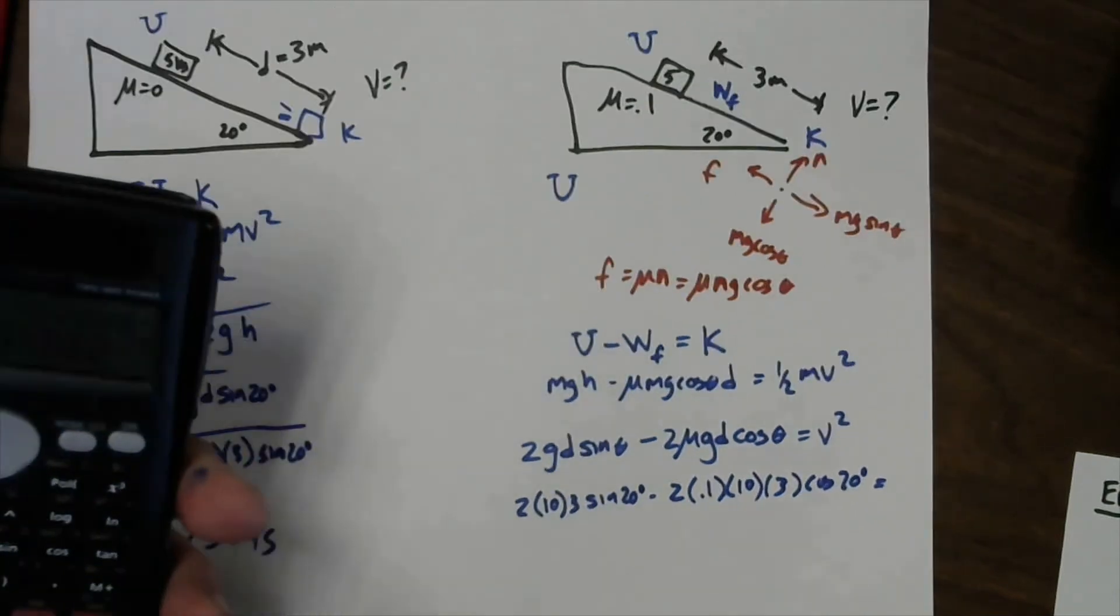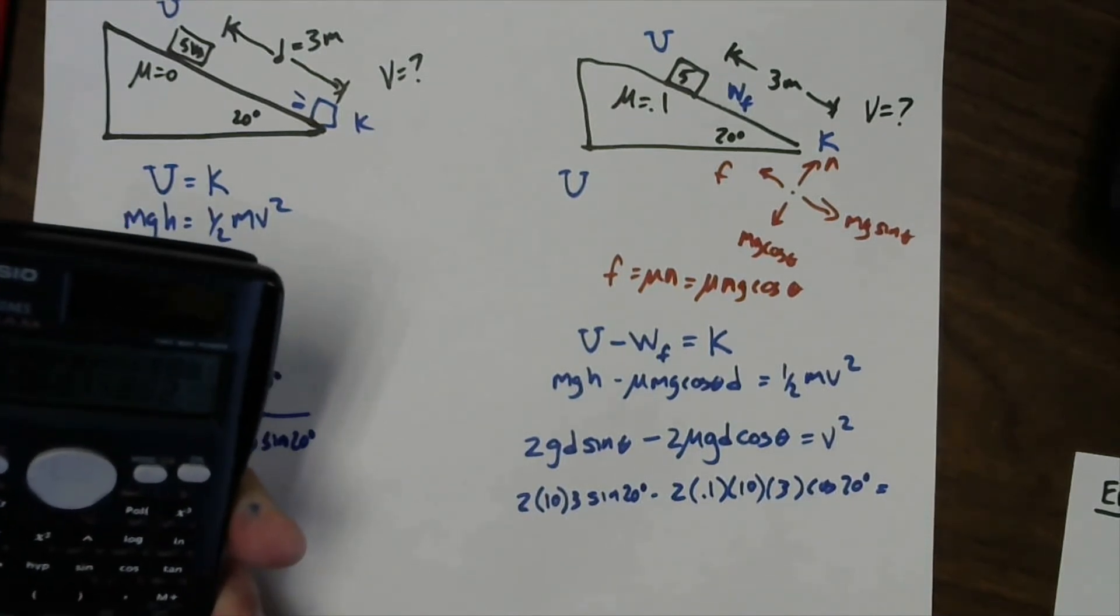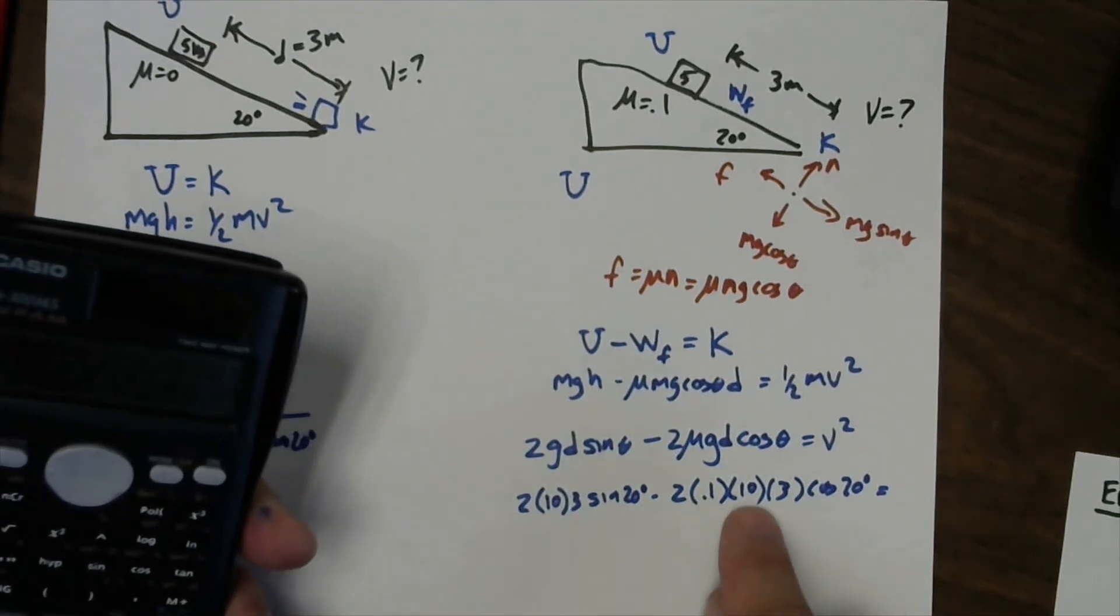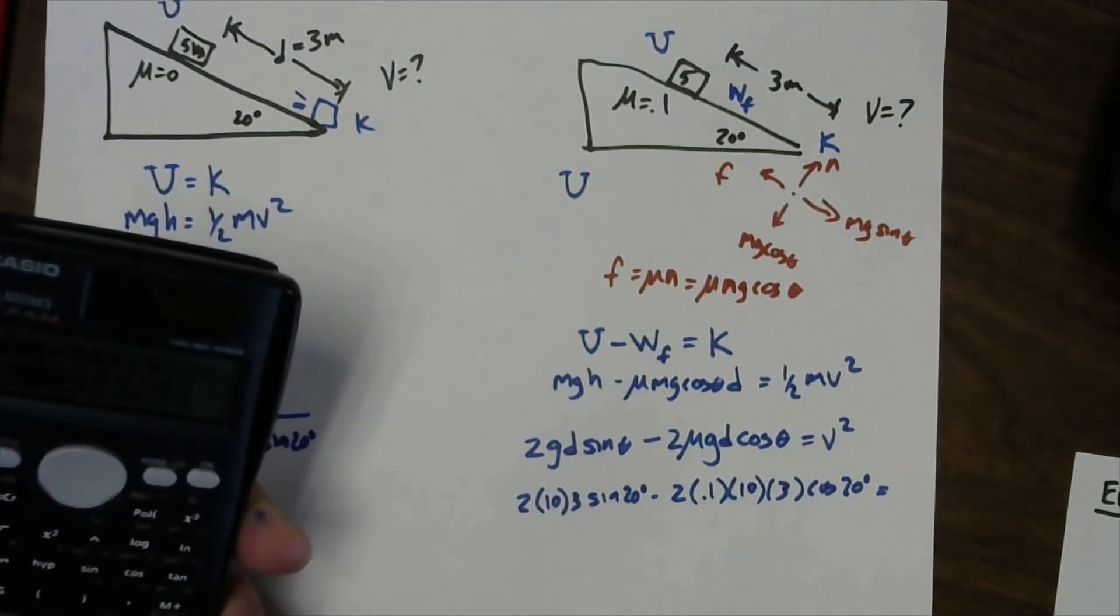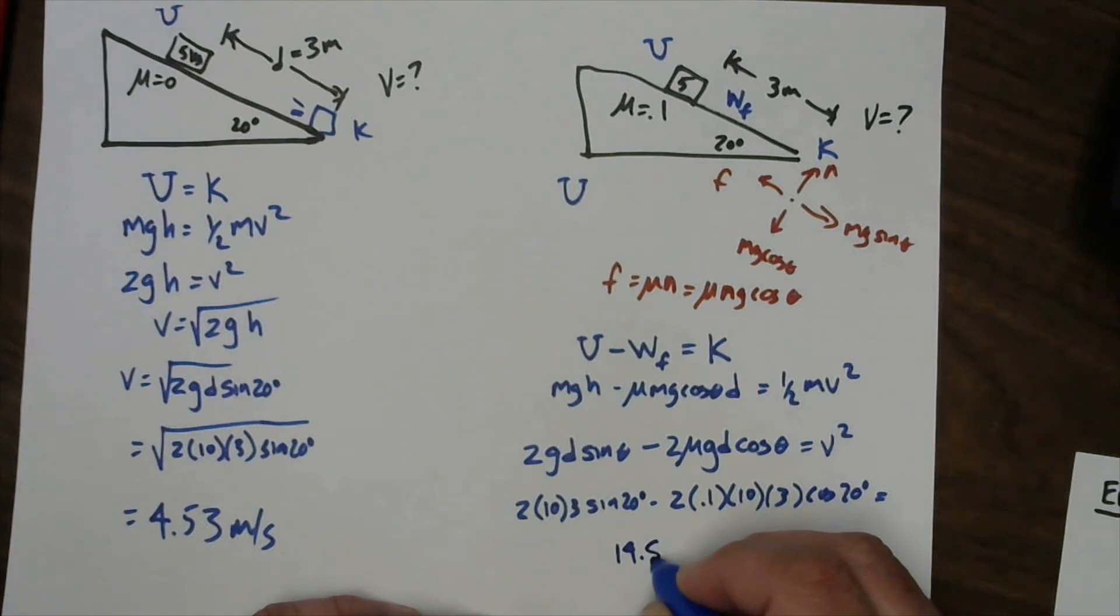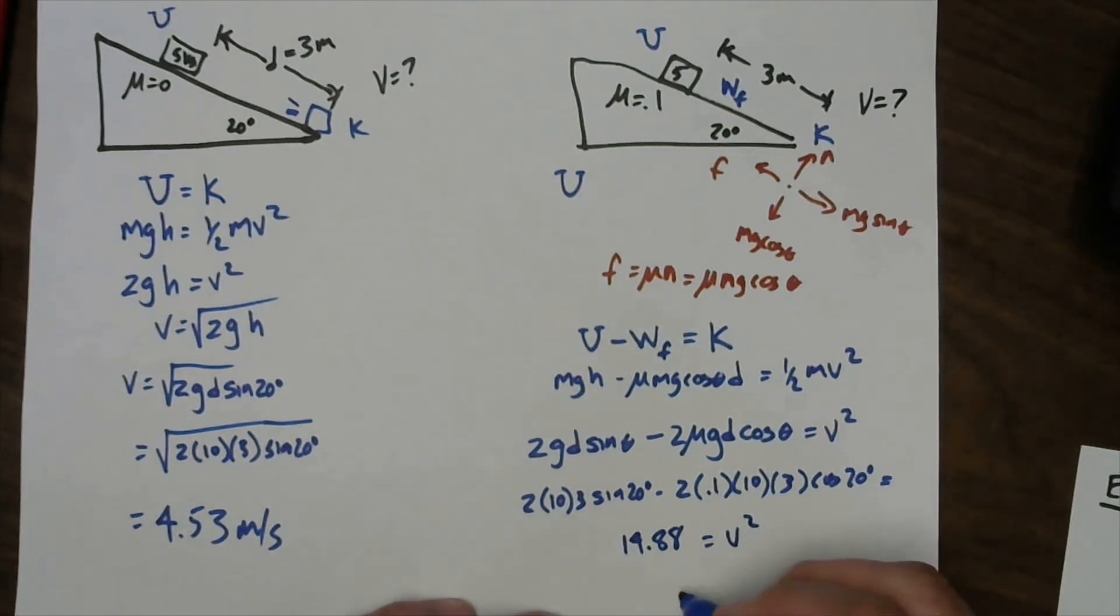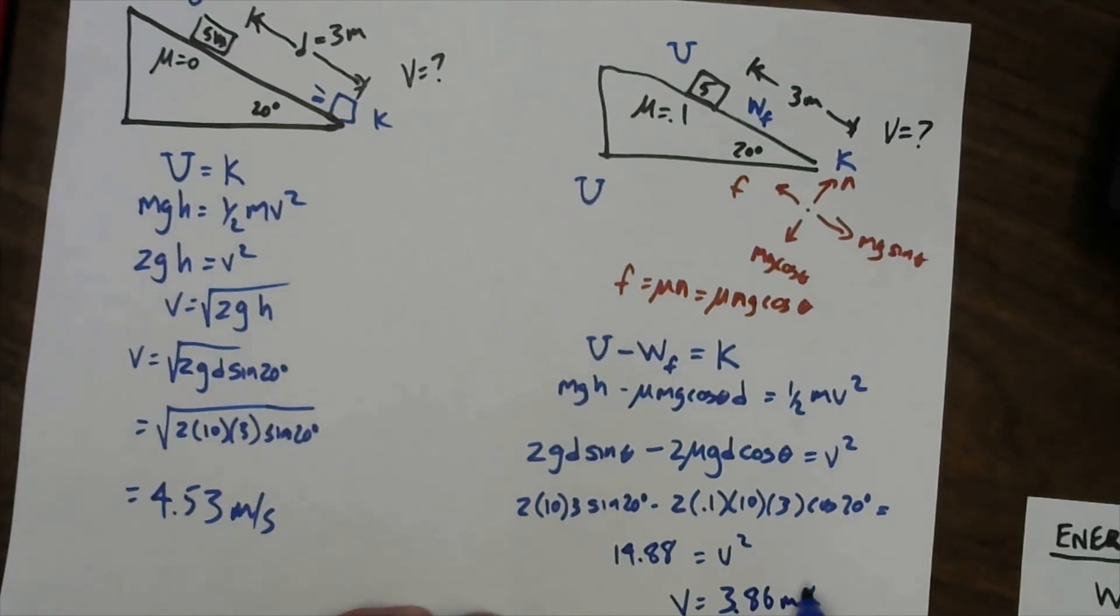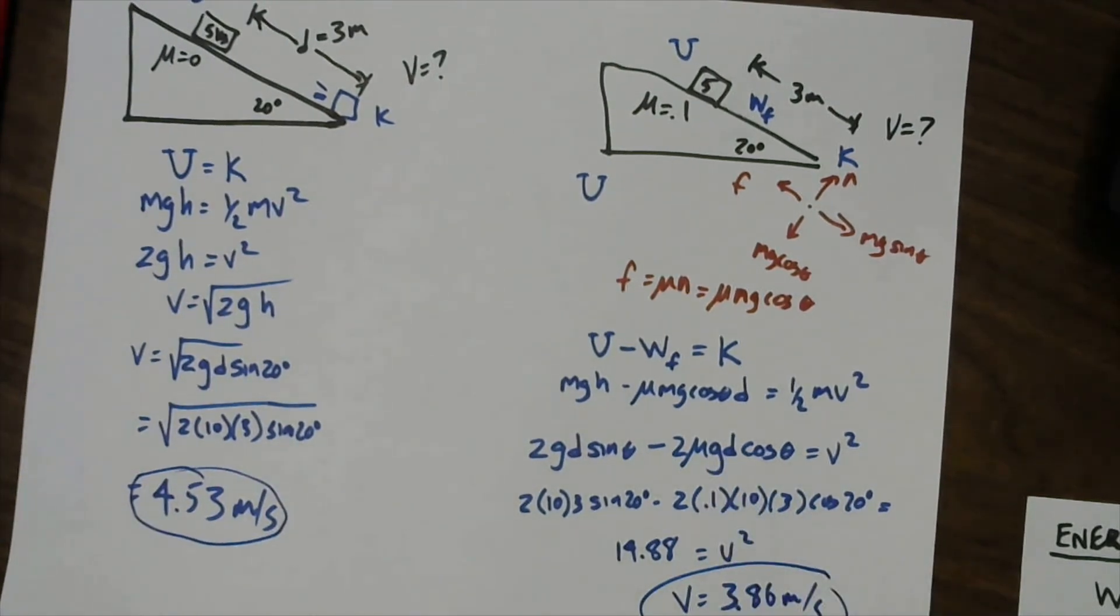This part we already did, by the way, but what the heck, we'll do it again. 2 times 10 times 3 times sine of 20, and then we're going to subtract away parentheses. You know, 0.1 and 10 cancel each other out, so 2 times 3 is 6, cosine 20, in parentheses. All that stuff subtracted and everything is 14.88, and that equals v squared. So we have to take a square root of this number, and we get a v of 3.86. And indeed, it is a little less than the original, so we get to the bottom with less velocity because we lose some energy to friction.